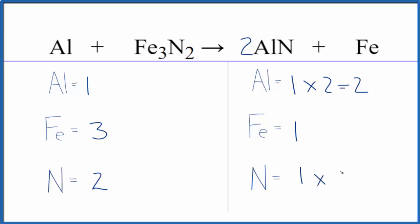So the nitrogen atoms are balanced. We have two aluminums here and one here. Put a 2 here. One times two, that balances the aluminum atoms. Three irons on the reactants and one here.